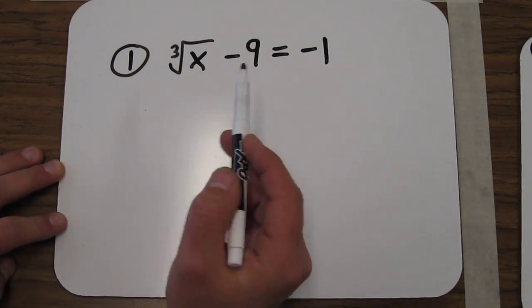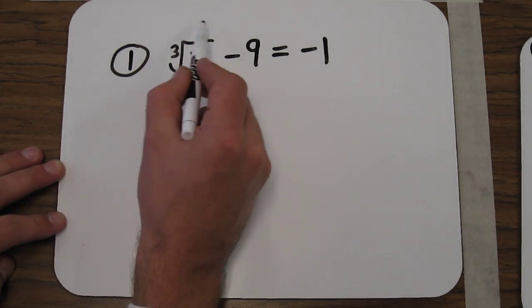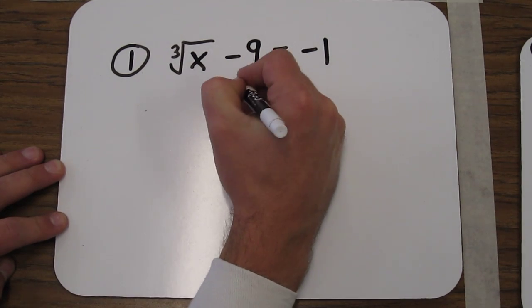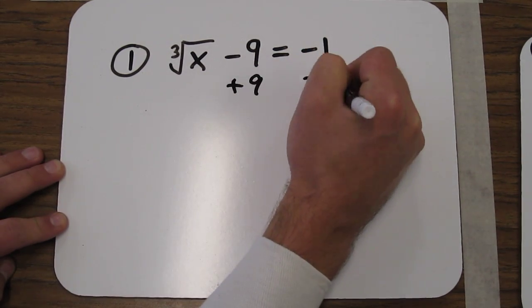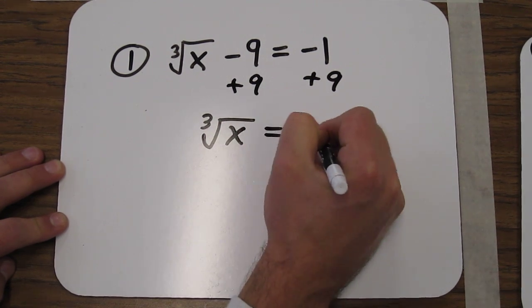So in this first problem, we have the cube root of x minus 9 equals negative 1. We want to isolate this part of the equation. So by adding 9 to both sides, we now have the cube root of x equals 8.